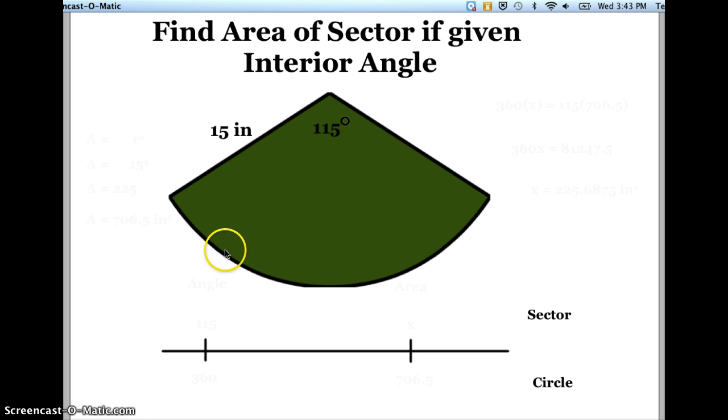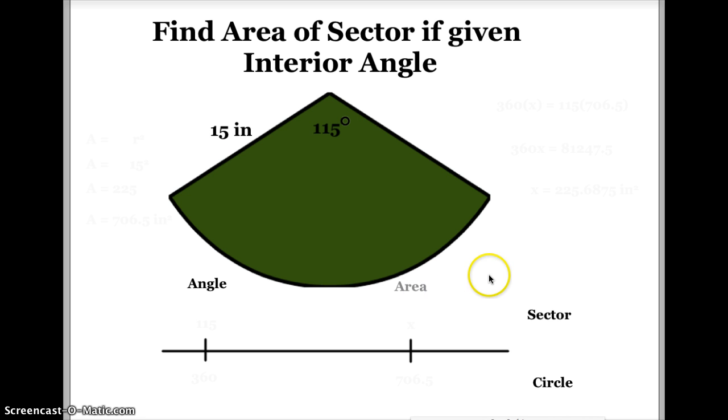Because of this, I'm going to use my angle and my area as the two variables I'm going to look at. Now I'm going to put over here in this box the angle of the sector, which I'm given in the problem, which is 115. I know that there's 360 degrees in a circle, so I'm going to put 360 degrees there.